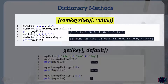The class method fromkeys takes a sequence and a value as arguments, where the value argument is optional. It returns a dictionary object where keys are the sequence elements and their values are set to the value argument. If no value argument is passed, then the keys have a value of None. In this example, fromkeys takes a sequence as the first argument and integer value 0 as the second argument, returning a dictionary where all keys are set to 0. In the next example, fromkeys takes only a sequence as argument, so all keys have a value of None.